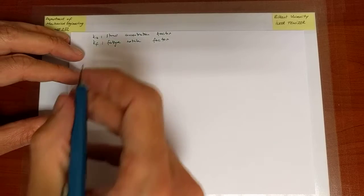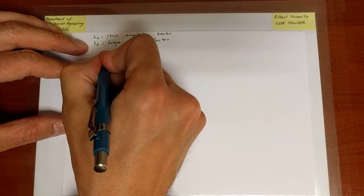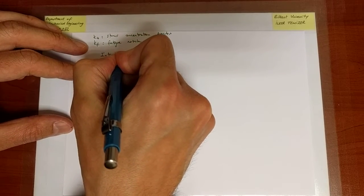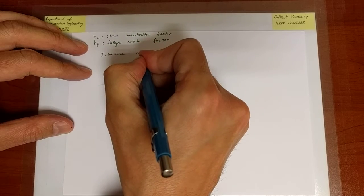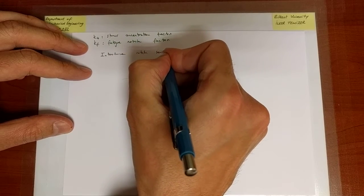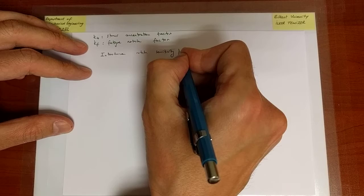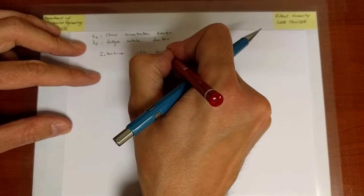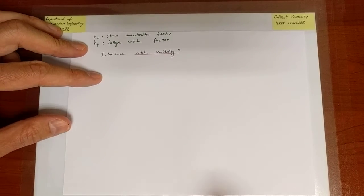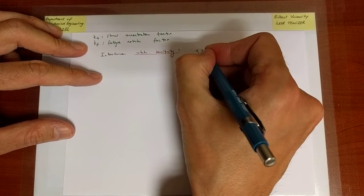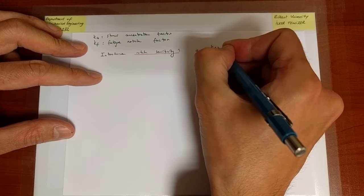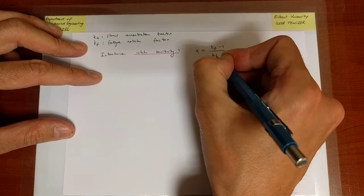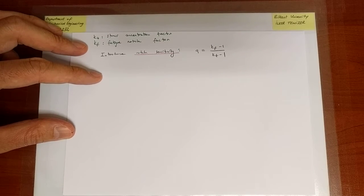Notch sensitivity is denoted as Q, and it is simply the ratio of KF minus 1 to KT minus 1.